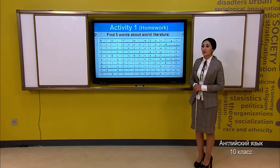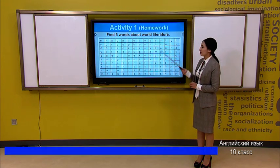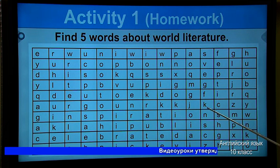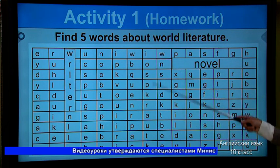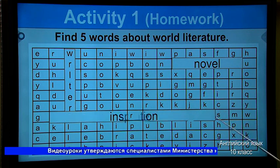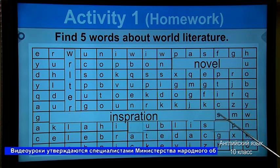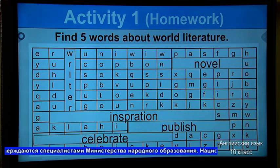Before starting our lesson, let's check your home task. Your first home task was activity number 2. You had to find out 5 words about literature. Did you find? Let's check. Novel, writer, inspiration, publish, celebrate.